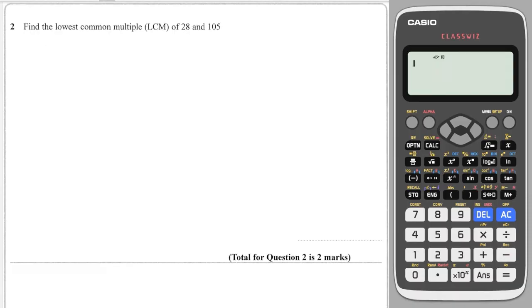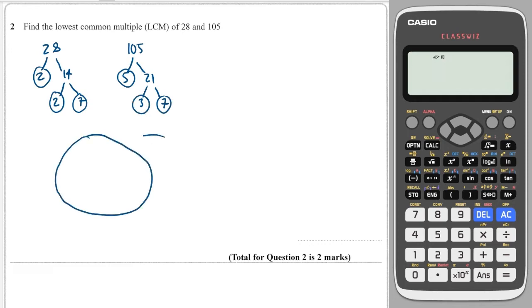First step is to split into prime factors. So we have 2 and 14, 2 and 7, these are all prime. We have 105 which is 5 and 21, and this is 3 and 7. We then set up our Venn diagram and we look at what do they share.